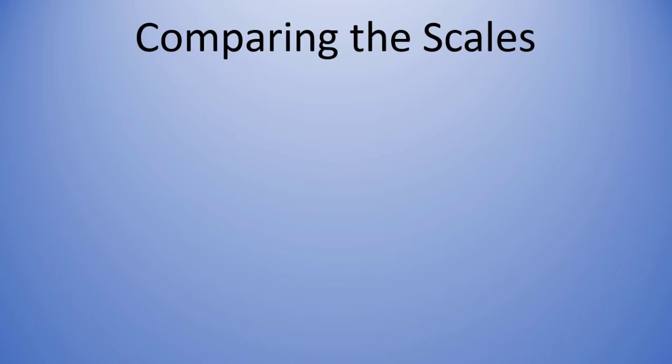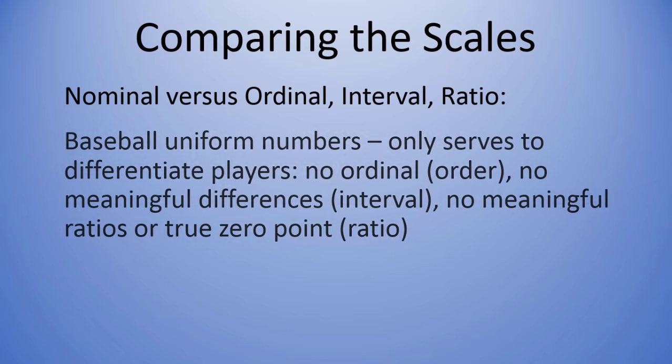And then finally, let's take a look at nominal versus ordinal, interval, and ratio. Recall with our example of baseball uniform numbers: the numbers only serve to differentiate between players. There's no order to them. 25 isn't necessarily better than 23.